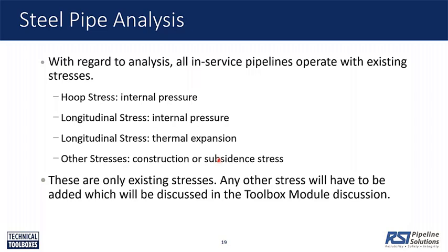When you pressurize the pipe, that pressure creates a longitudinal stress as well. In the axial direction of the pipe, we could have thermal stress — and most of the time we do have thermal stress, which we have to account for. Sometimes there are other stresses from construction, or from ground subsidence or settlement. So those are examples of stresses that we actually have to account for, and sometimes we refer to these as existing stresses.